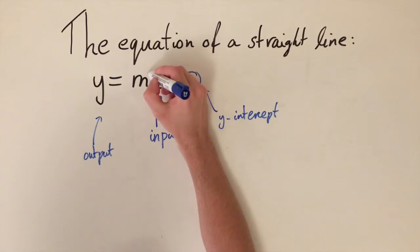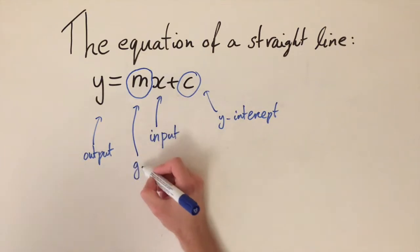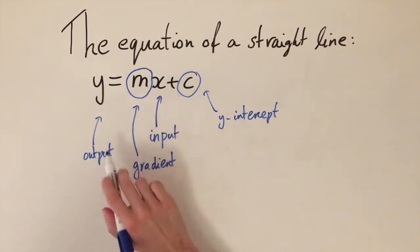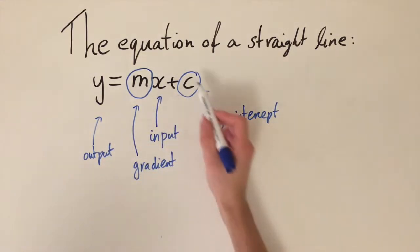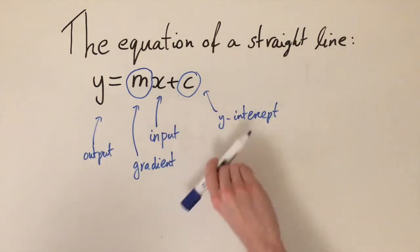And lastly, this constant right here in front of x, the m, this represents the gradient, so this is really important. The gradient tells us how steeply the line goes up or it goes down. So c gives us how high up the axis it is, and m gives us how steeply the line goes up or down.